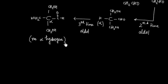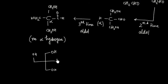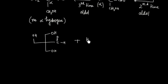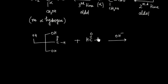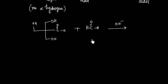So now we have the molecule C(CH₂OH)₃CHO and we also have HCHO and OH⁻. Since neither compound has any alpha hydrogen, an aldol reaction cannot take place. Instead, the Cannizzaro reaction will occur.